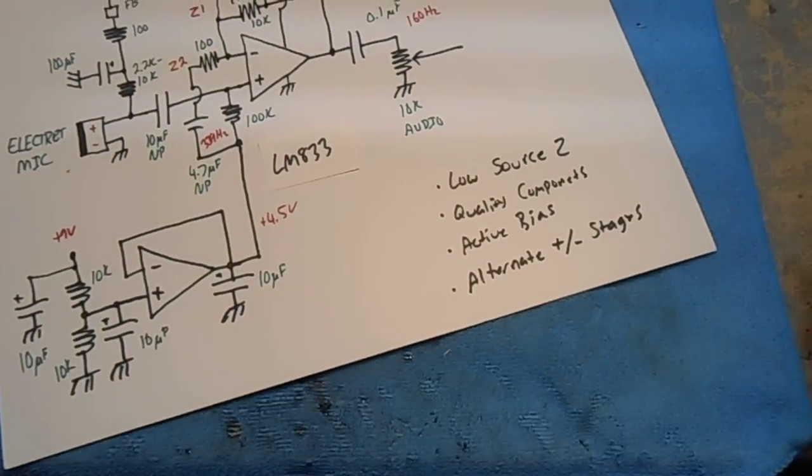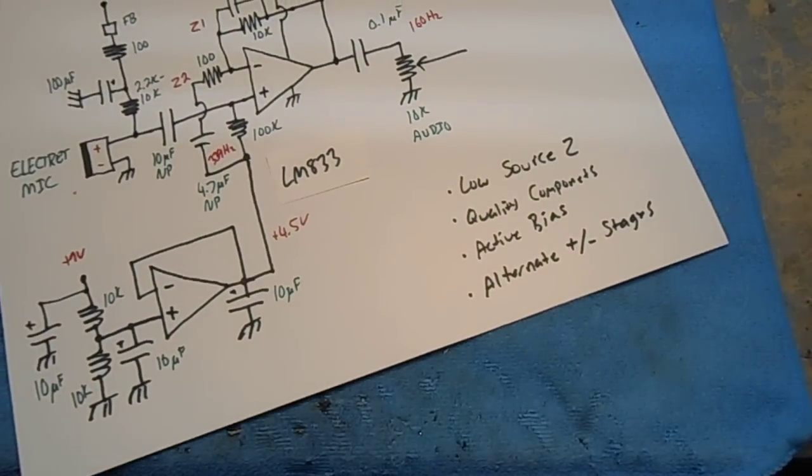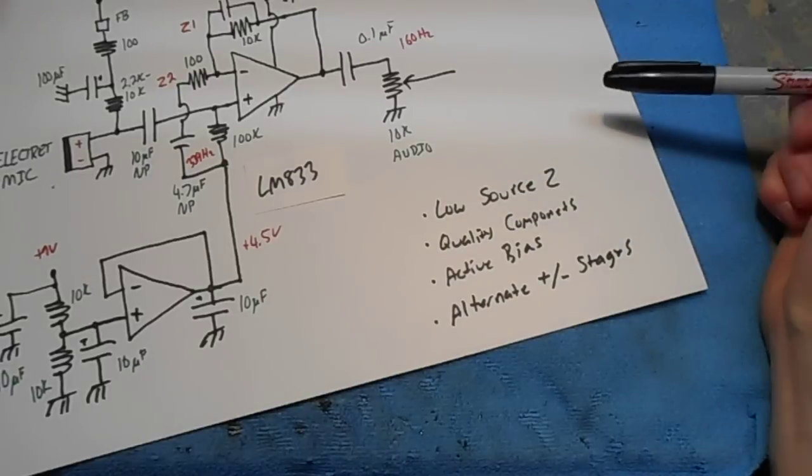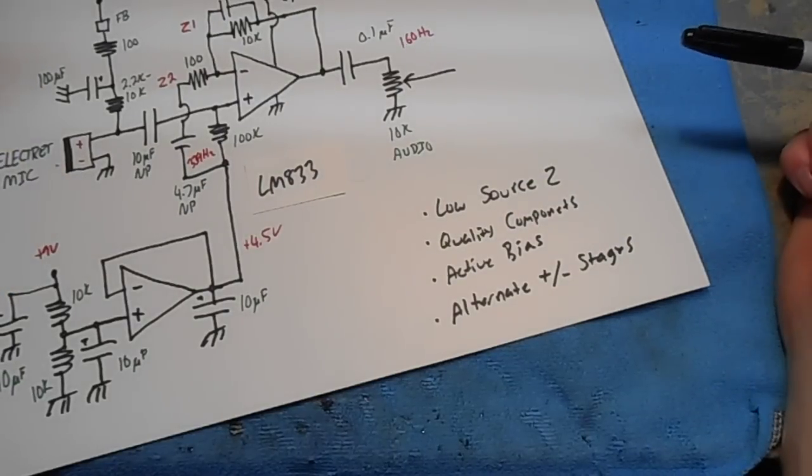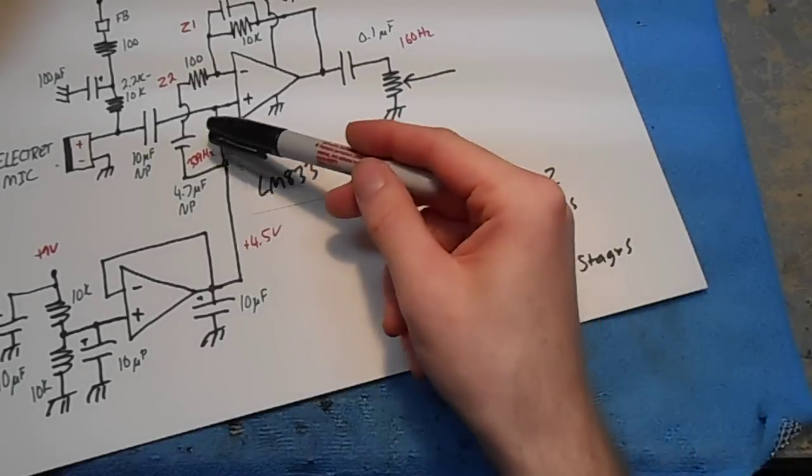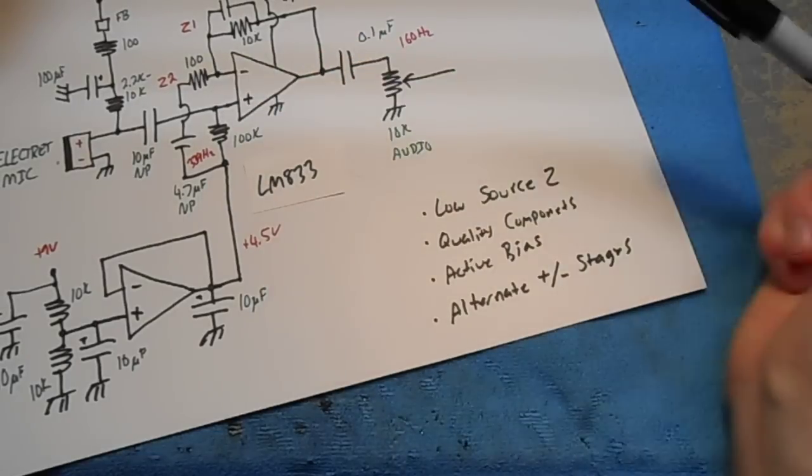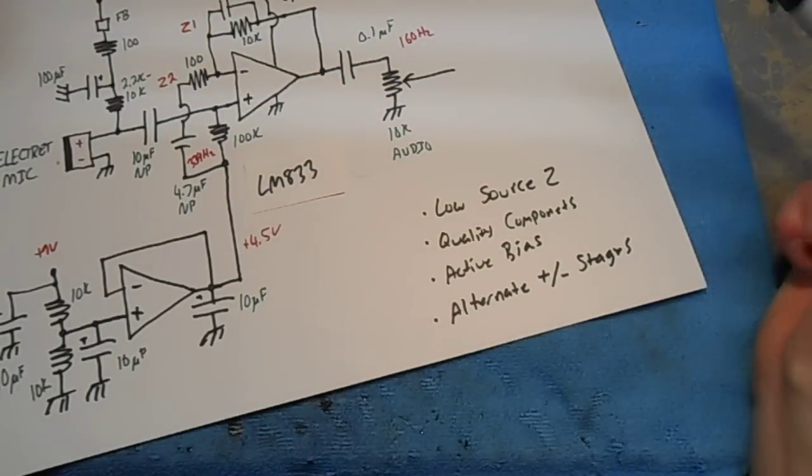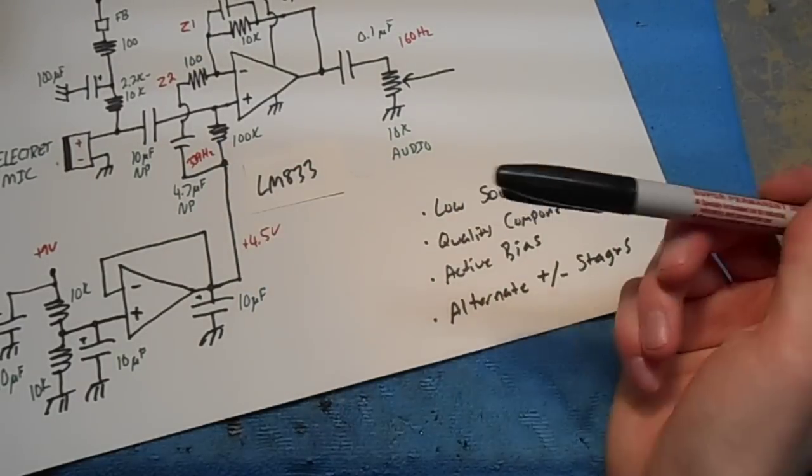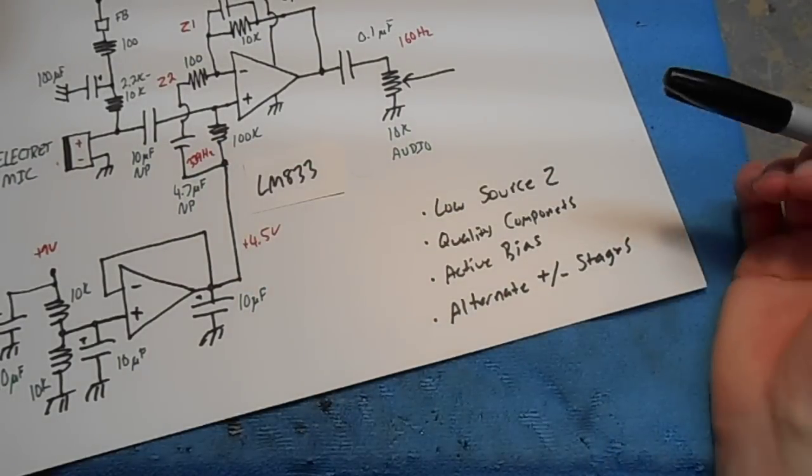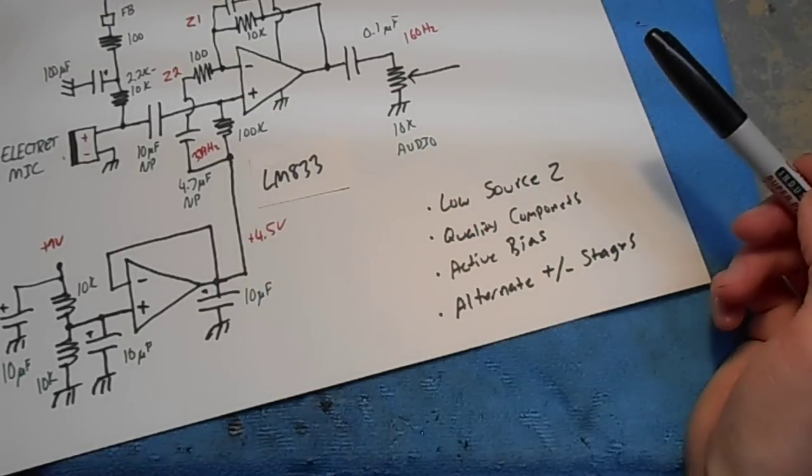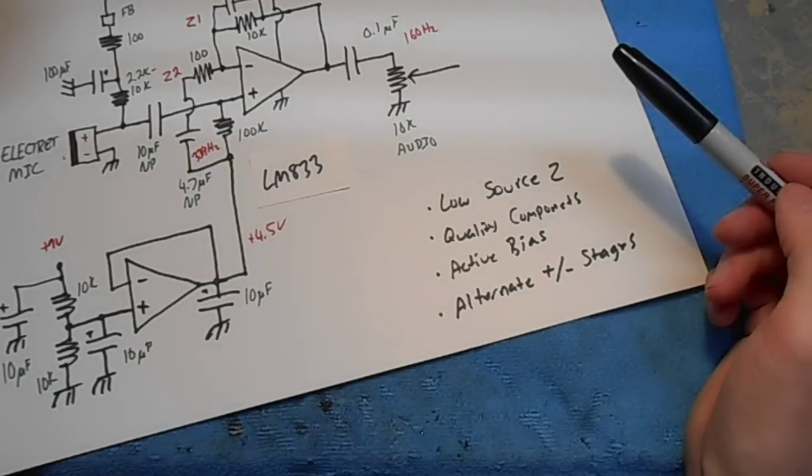So the main keys that you want to follow when designing your circuits, of course, is low source impedance. Low impedance, low noise. There's just no way around it. You want to use quality components. All your main resistors should be one percent metal films. Nice, high-quality, non-polarized capacitors with low leakage. And of course, you want to use the active bias if you can. It's just a minimal number of components. It really stabilizes your circuit.